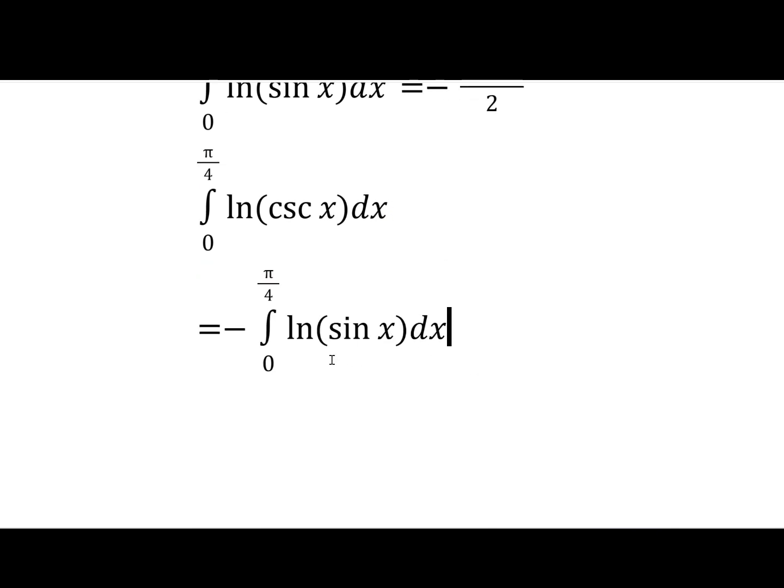So I kind of want to do a t equals tan x substitution, because that way the bounds would become 0 to 1, and also we'd remove the trig functions. So how are we going to do that? Well, we're going to multiply by 2 and divide by 2 like this.